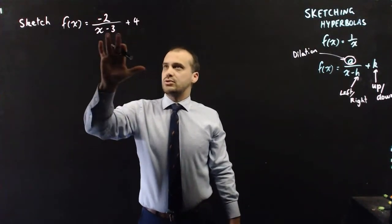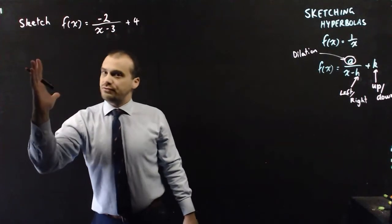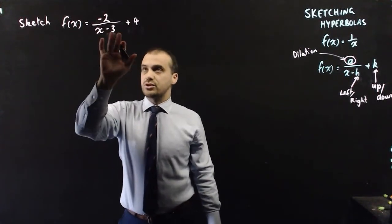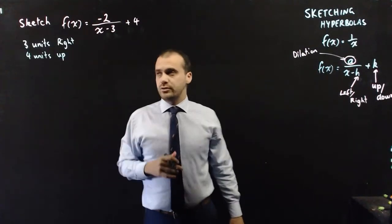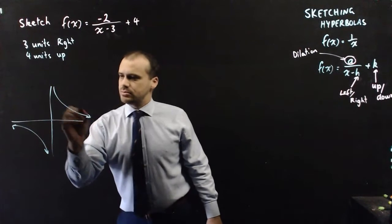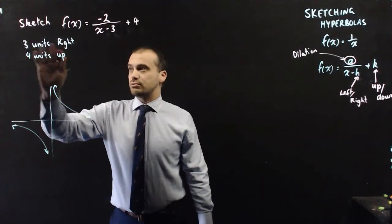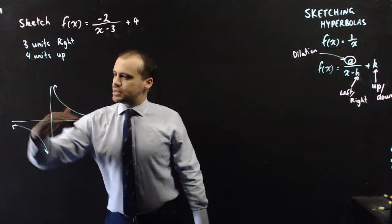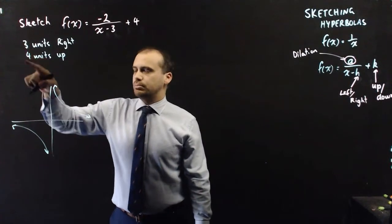The first thing we want to think about is shifting left and right and shifting up and down. That negative 3 is going to shift it to the right — remember, those move in the opposite direction to what you might expect — so 3 units to the right. And this positive 4 is going to move it 4 units up. If I ignore the negative 2 for a second, a hyperbola looks like this with asymptotes. But this one's been shifted 3 units to the right and this asymptote moves 4 units up.